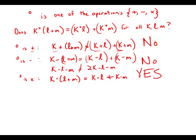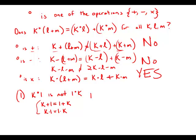So if we can determine which operation it is, we'd be able to answer the question. Statement number one tells us that k circle 1 is not equal to 1 circle k for some numbers. We know k plus 1 equals 1 plus k and k times 1 equals 1 times k for all real numbers — that's the commutative law. But 1 minus k does not always equal k minus 1. So statement one tells us circle must be subtraction, and if it's subtraction, the answer to the question is no. Statement one is sufficient.